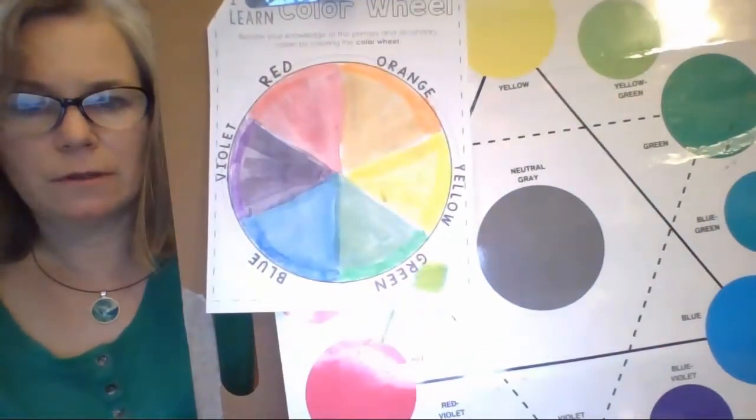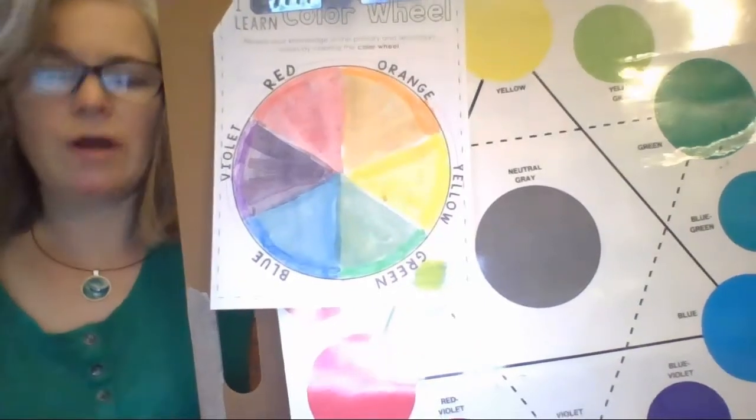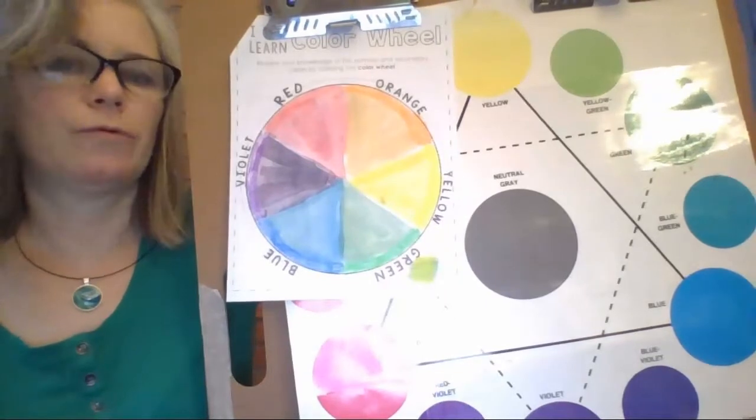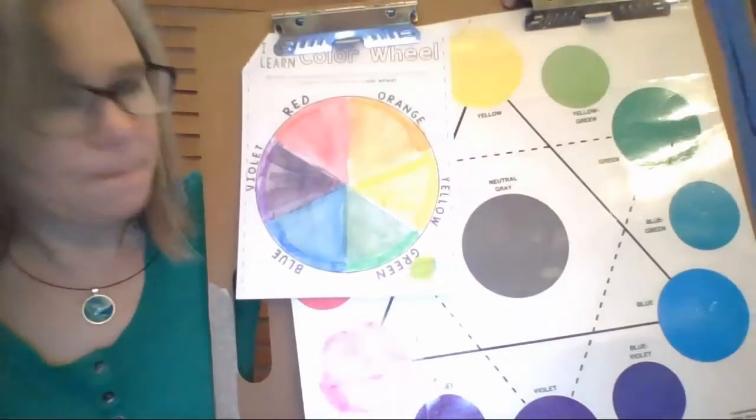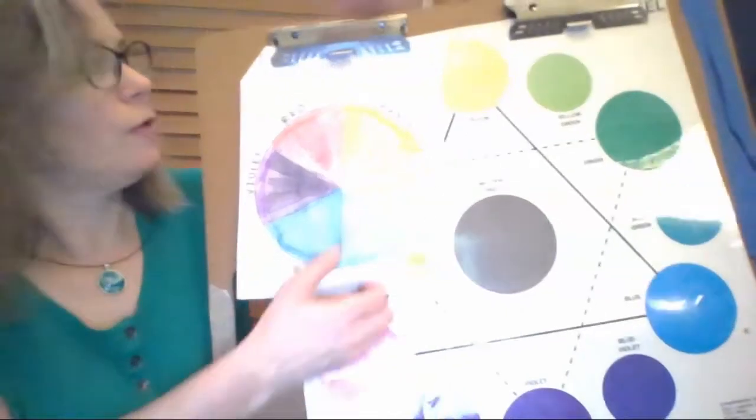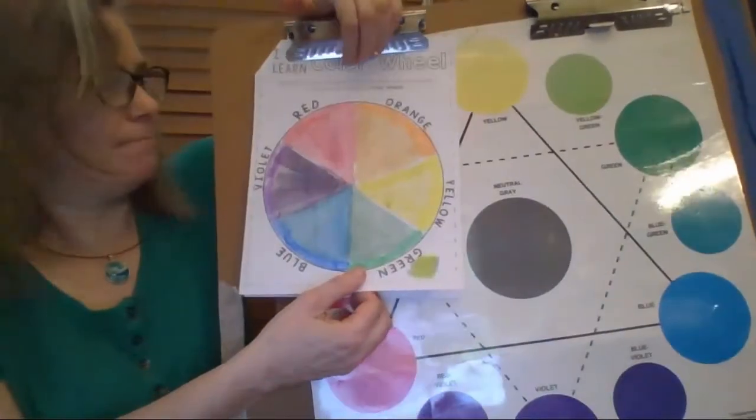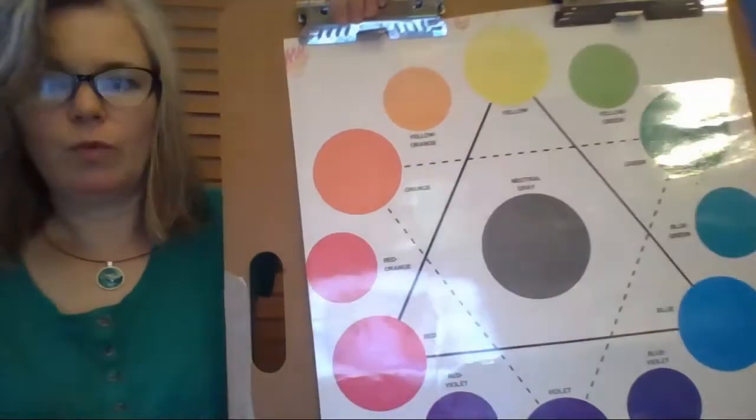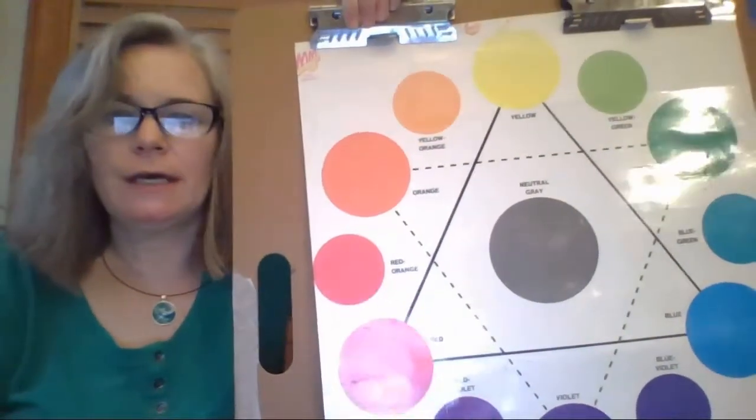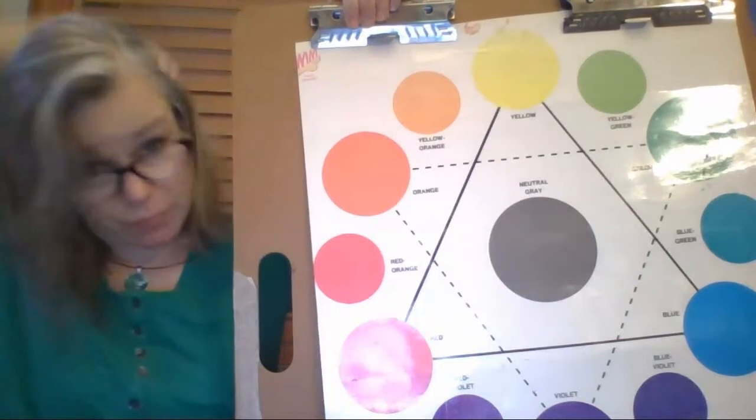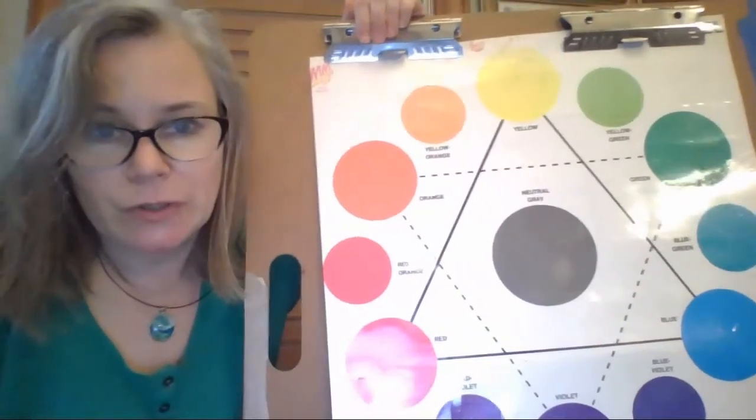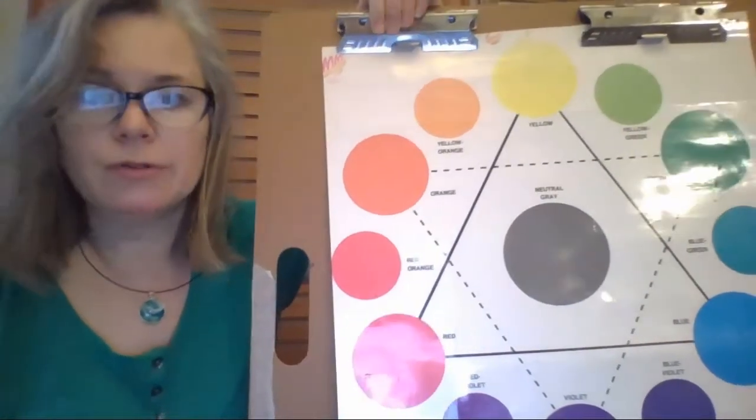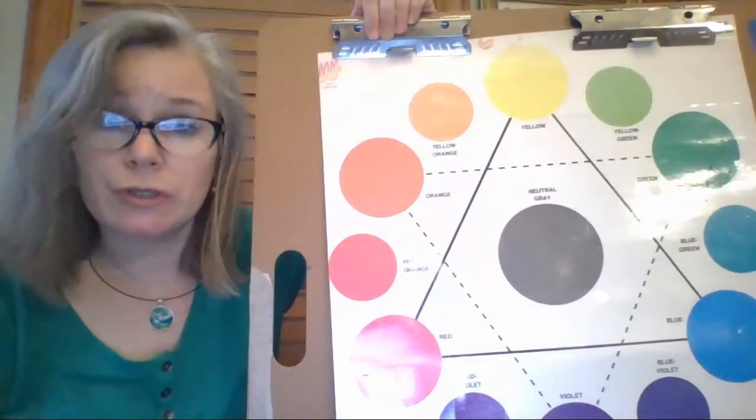So you can see this green is a little bit different from this green. So you can have different varieties of green or blue or purple or red or orange or yellow. And as a matter of fact, when you look at this color wheel, let me just take this off of here. When you look at this color wheel, you can see it doesn't just have the primary and the secondary colors. You'll notice some smaller circles. And those smaller circles are what we call intermediate or tertiary colors. So those are the colors when you mix a primary with a secondary.